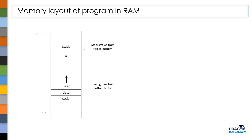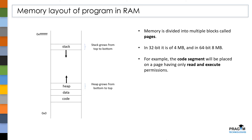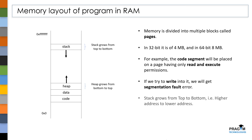This is how the process image looks like in RAM. There are a few important points to remember. In Linux, we divide memory into multiple blocks called pages, where each page is 4KB in size by default. The code segment will be placed in a page with only read and execute permissions, so when a user tries to write into this code page, we will get a segmentation fault error from the kernel. The most important point: the stack always grows from top to bottom, i.e., from higher address to lower address, whereas the heap grows from bottom to top, i.e., from lower address to higher address.